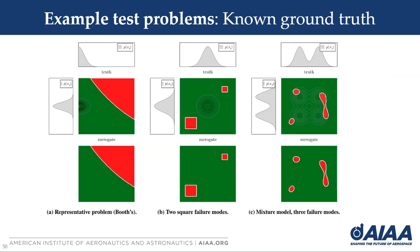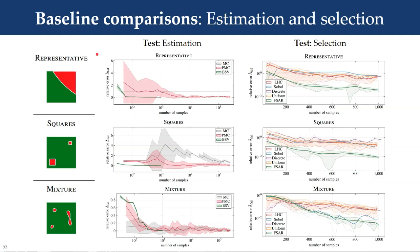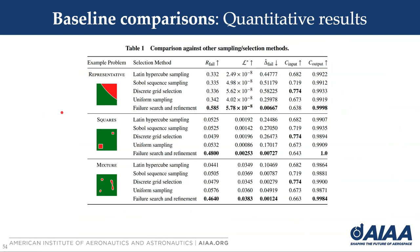We apply our algorithm to three test problems with access to ground truth. Results show that Bayesian Safety Validation converges and reduces error much faster than other baselines, and importantly does this in orders of magnitude fewer samples. The failure search and refinement acquisition functions outperform all other sampling schemes. Looking at the final iteration, they outperform all other cases in various safety validation metrics and are comparable in input coverage, achieving less than one percent relative error in all cases.